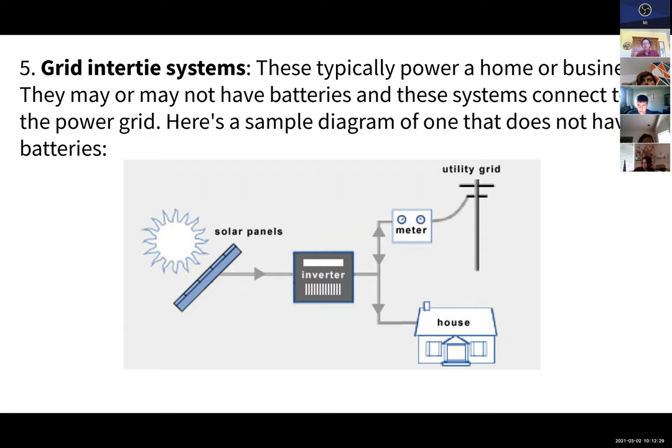The last type of system I wanted to mention is called a grid intertie system. This is a system where there's no batteries—you just have solar panels and an inverter. The electricity goes to the house and the meter. If the house uses all the power, great. If the house doesn't use all the power, then the extra power goes back through the meter and out into the utility grid, helping provide other people with power who need it. This is what you mostly have when you have a system at a house.